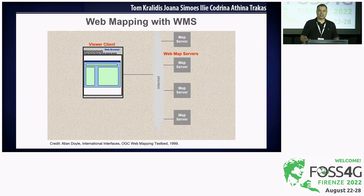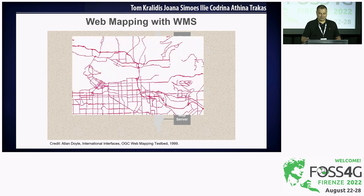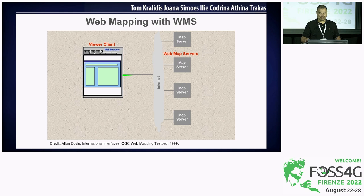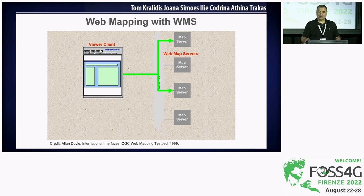I'm going to show my age — this is the actual first PowerPoint from the web mapping testbed in 1999. We demonstrated that map servers can provide static images of geospatial data and they can run on different servers. What happens when you put those together?